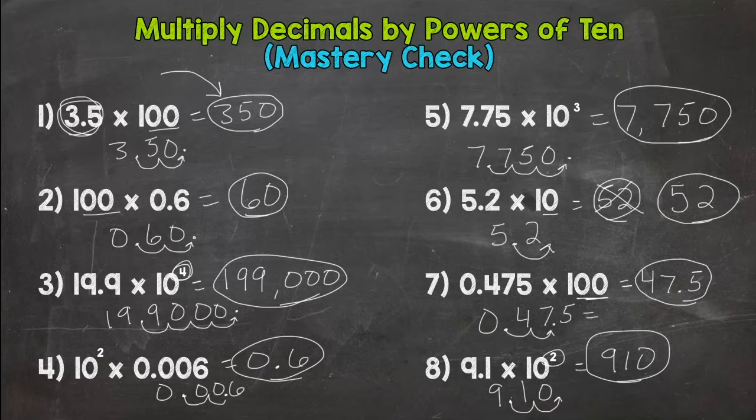So there are your 8 products for multiplying decimals by powers of 10. Again, hopefully at least 6, 7, or 8 correct. Hopefully you hit that mark.